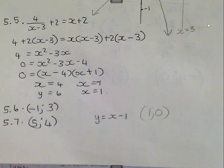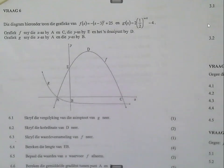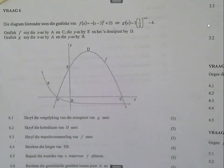On the next page we've got question 6. What they're telling us there is that we have the graphs of f of x which is negative bracket x minus 3 squared plus 25 and g of x which is 2 and then the base is a half to the power of x plus 1 minus 4.